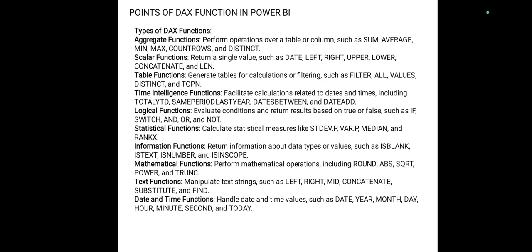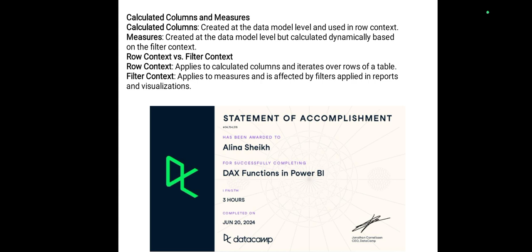Points of DAX Functions in Power BI — DAX function types include: Aggregation Functions, Scalar Functions, Table Functions, Time Intelligence Functions, Logical Functions, Statistical Functions, Information Functions, Mathematical Functions, Text Functions, Date and Time Functions, and Calculated Columns. Calculated columns operate at the data model level and are used with raw content and measures created at the data model level.